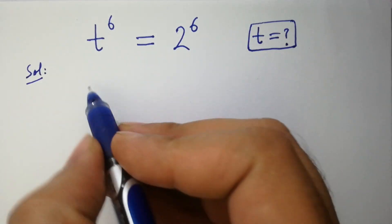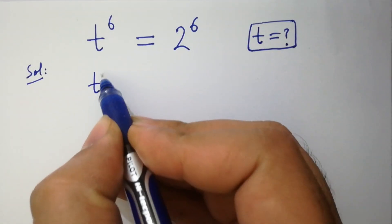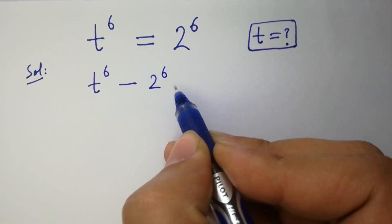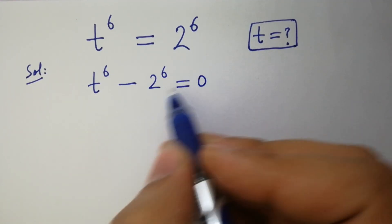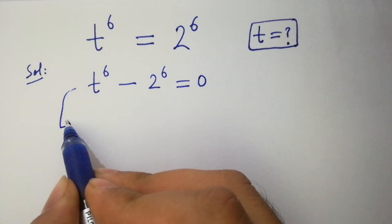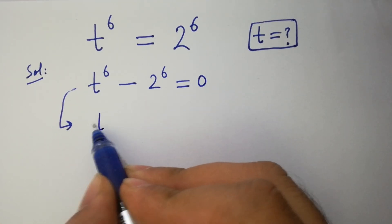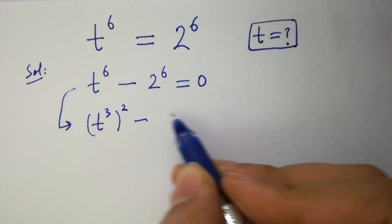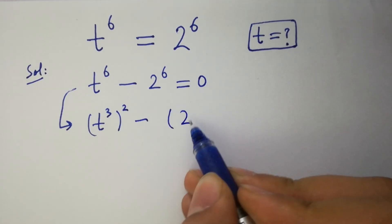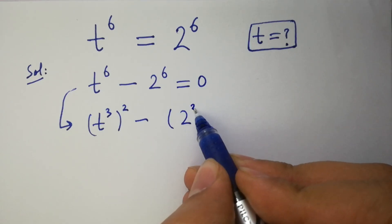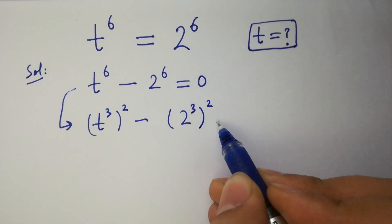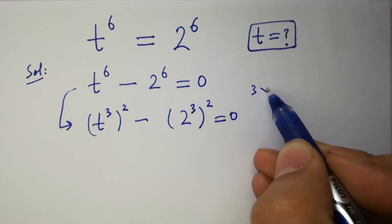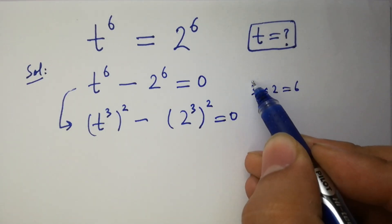It can be written as t to the power 6 minus 2 to the power 6 equal to 0, which is the same as (t³)² minus (2³)² equal to 0, since 3 times 2 equals 6.